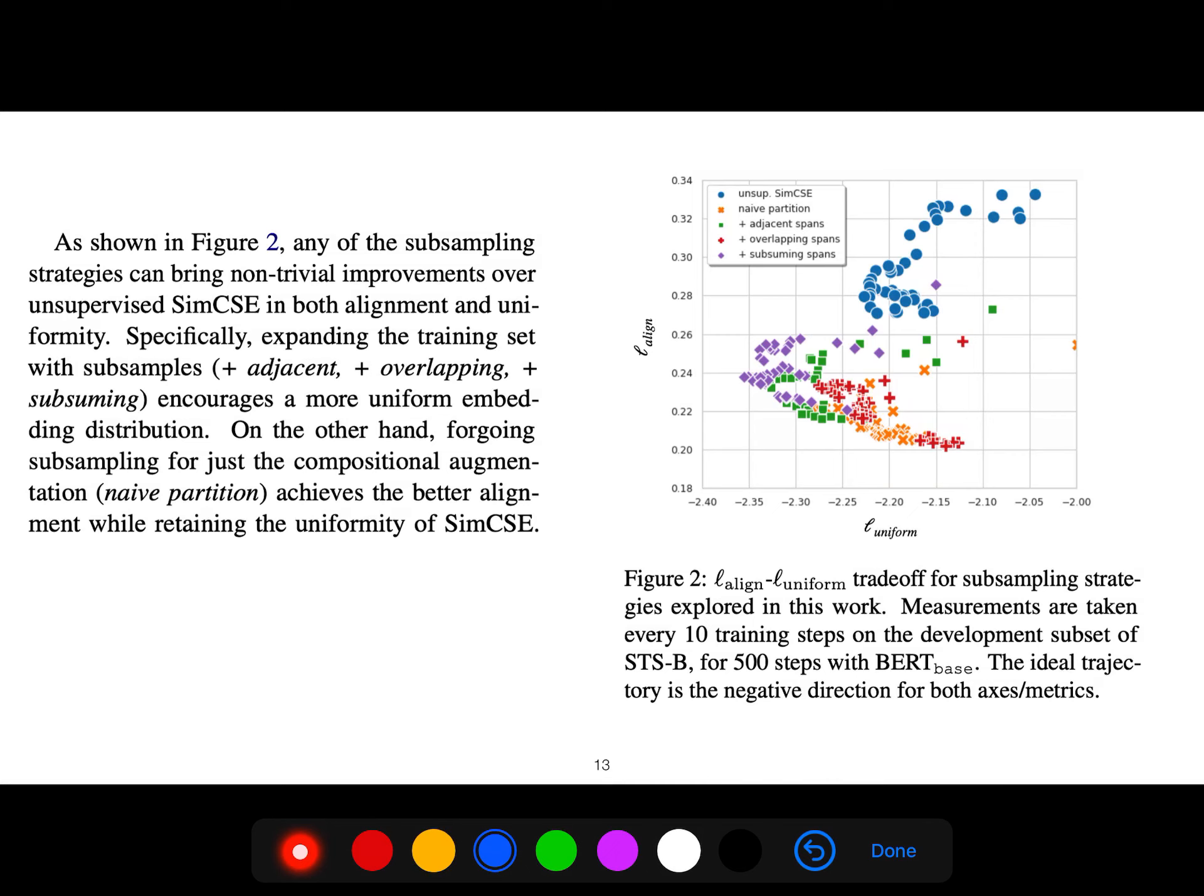As shown in this figure, as I said, there is a trade-off between uniformity and alignment loss. Each article is a different point in this figure.